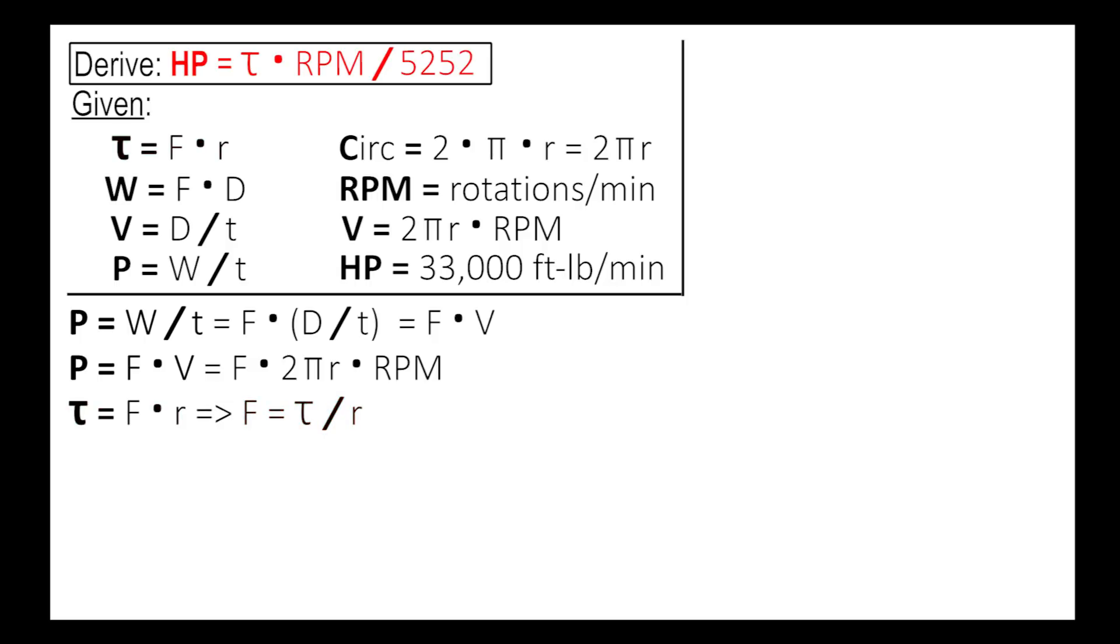Alright, simple enough. So if we put it all together, we get power equals torque over radius times 2 pi r times RPM. Great, look at that. Our r's then cancel out, which gives us the equation of power equals torque times 2 pi times RPM in foot-pounds per minute. Alright, well that gives us our power equation, but we still don't have our horsepower equation.